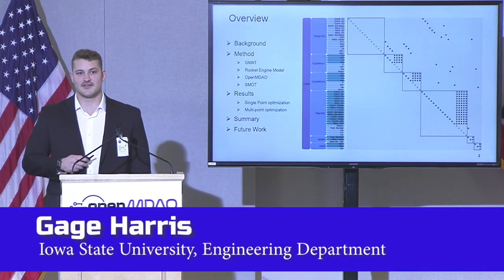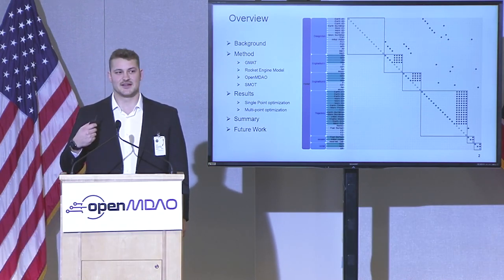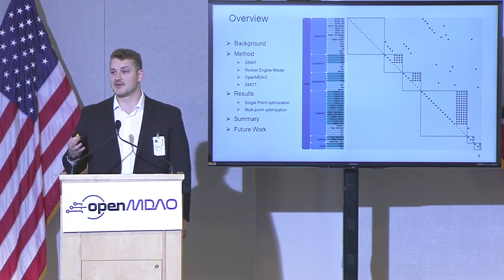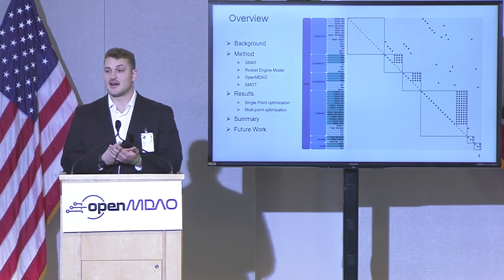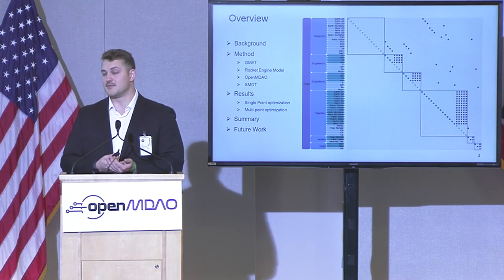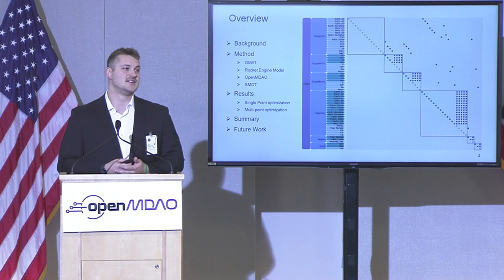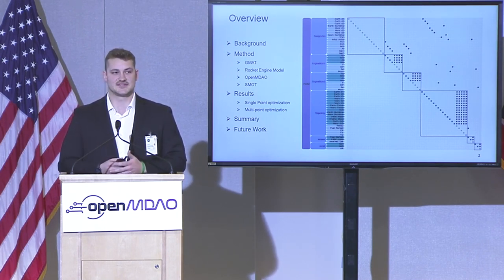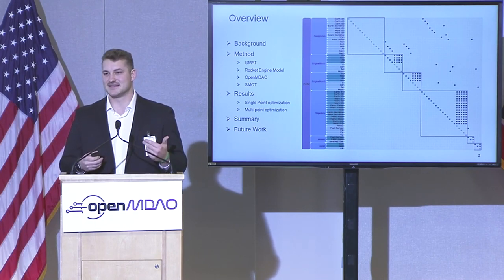Before I get into everything, I want to give you guys a quick overview on what I'll be talking about. First, I'll give some background on exactly what space mission design is and then give some relevant research on the topic. I'll then be going into our own formulation where I'll talk about each component: first GMAT, then our rocket engine model, how we're using OpenMDAO, and then finally what we developed, what we call SMOT. We'll then talk about a couple results where we ran some single point optimizations with various configurations and then ending with a multi-point optimization. I'll then give a summary on all those results before finally going into the future work and the next steps in my research.